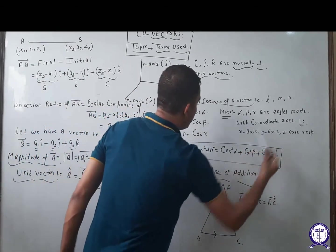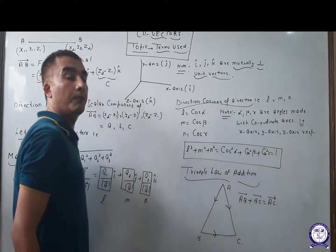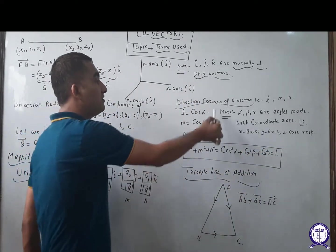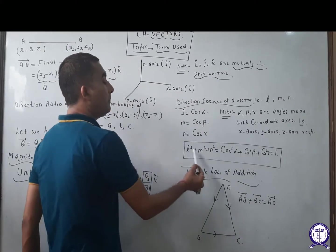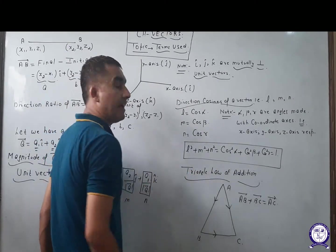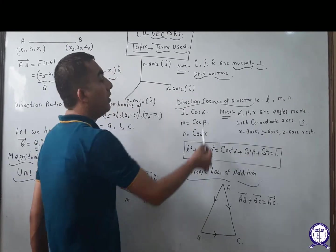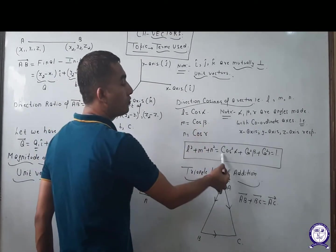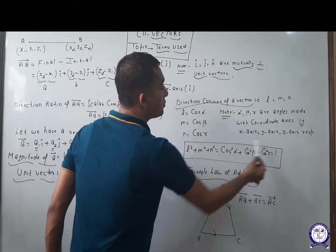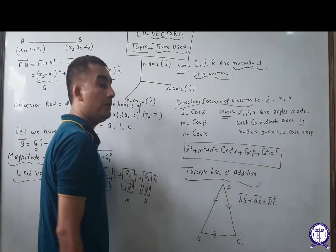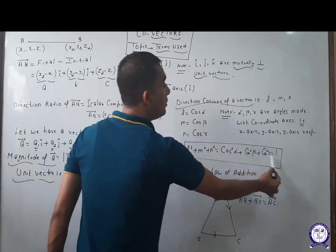A property of direction cosines is that l² + m² + n², or equivalently cos² alpha + cos² beta + cos² gamma, will always be equal to 1.